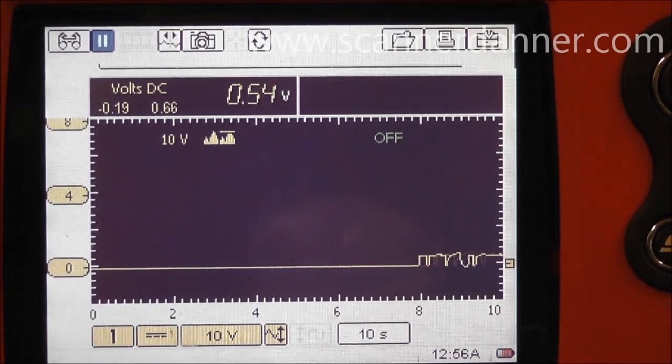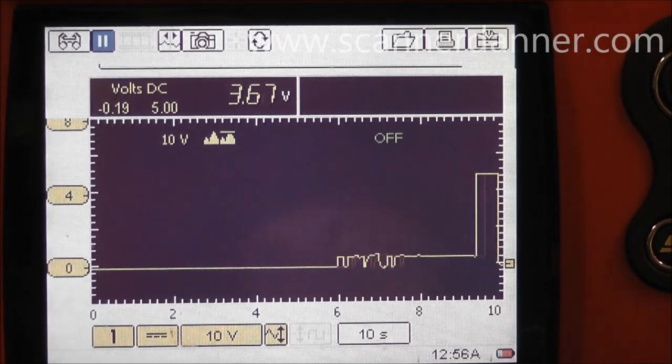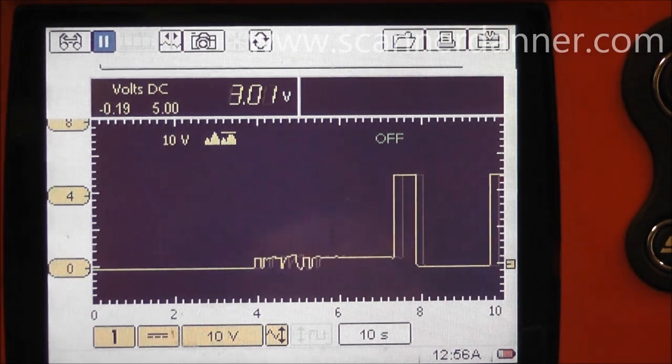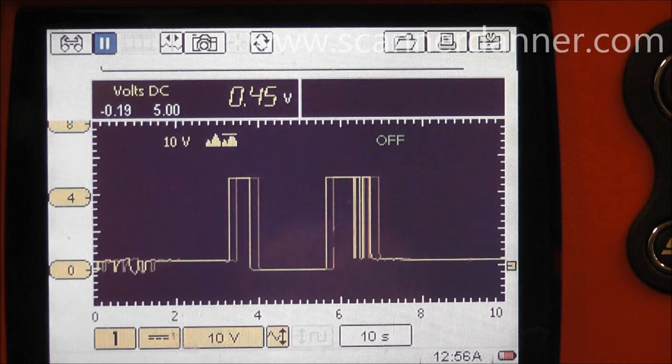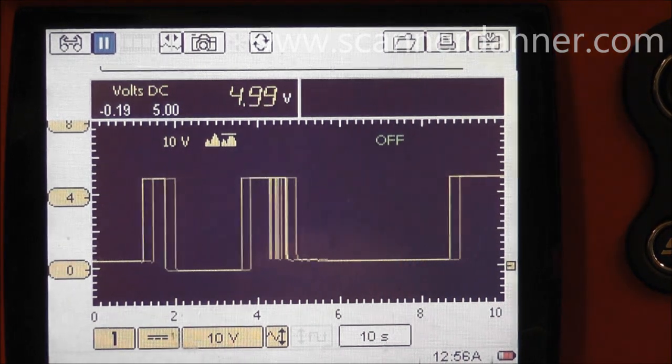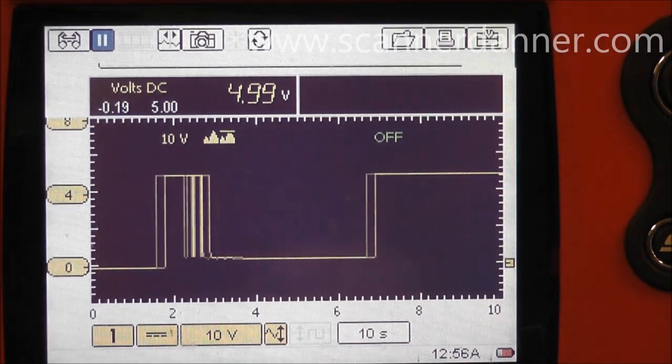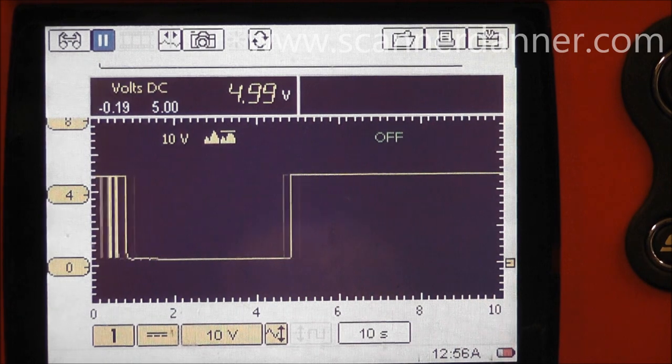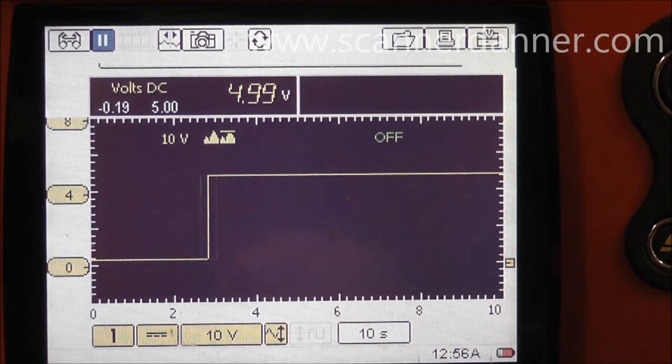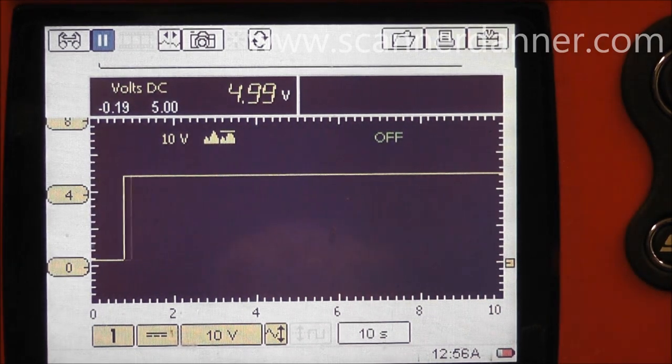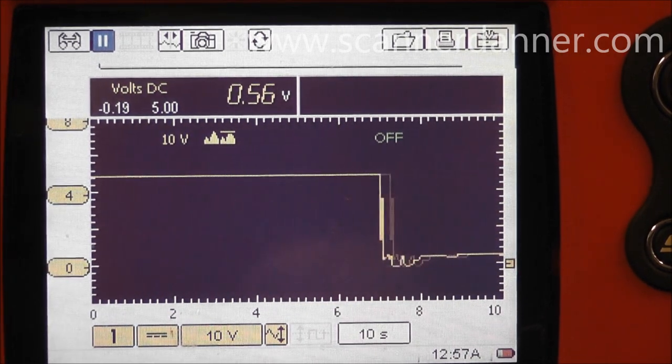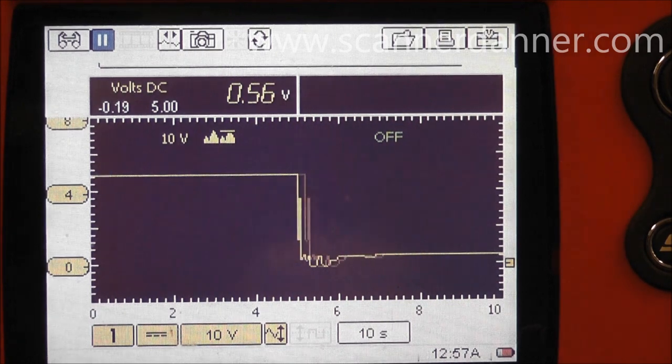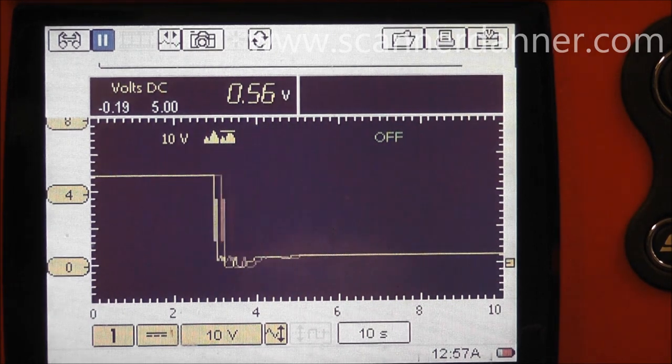Same thing on the reference wire, which is the bottom wire. And this one should be a steady five. And we want to do the same kind of tests. Some snap throttle. We don't want to see any drops or anything in that reference wire. And that looks pretty good. So I'm not concerned about the connector. I'm not concerned about the five volt reference and the ground.